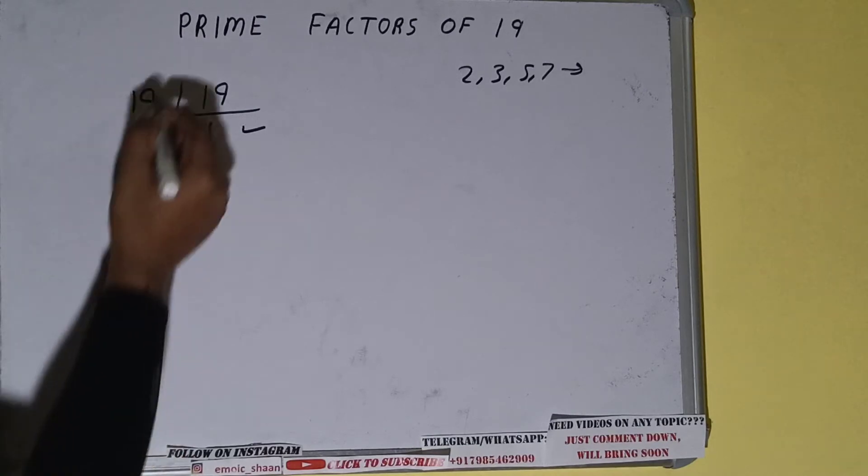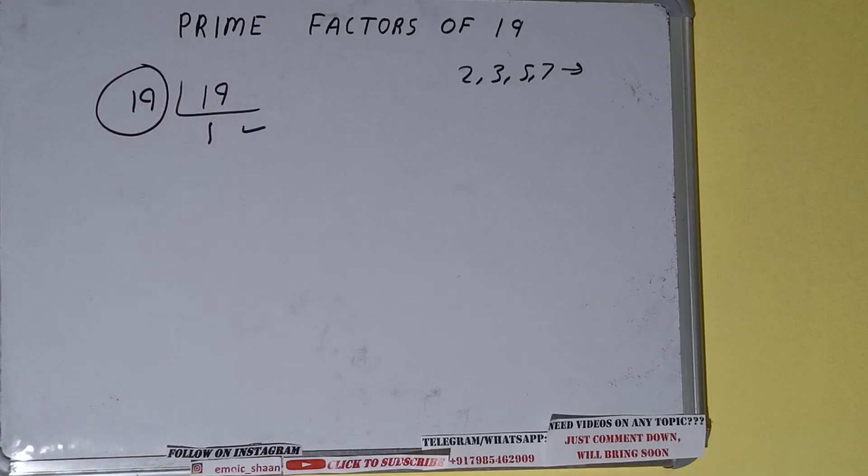Once we get 1, we need to stop, and whatever is on the left-hand side, that is the number 19, will be the prime factor of the number 19. Okay.